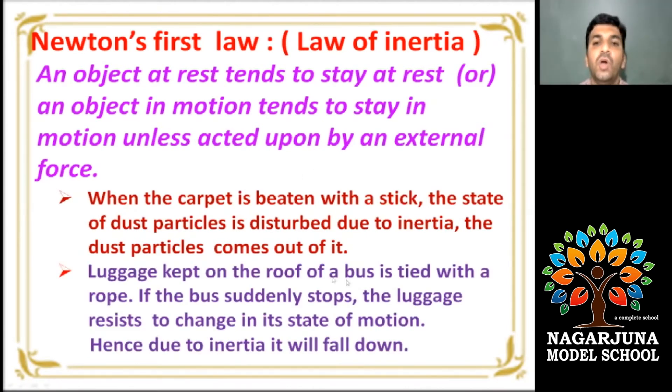Next, luggage kept on the roof of a bus tied with rope. As the bus moves, the luggage also moves with the velocity of the bus. If the bus suddenly stops, the luggage resists to change in its state of motion. Hence, due to inertia, it will fall down. To avoid this, the luggage kept on the roof of a bus tied with a rope. Clear?